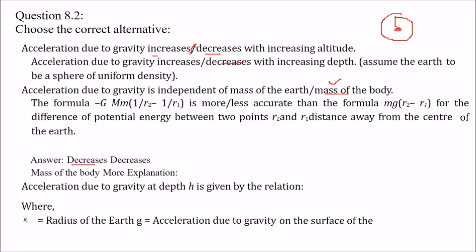Phir: acceleration due to gravity is independent of the mass of body — chahe koi bhi mass of body ho, jo acceleration due to gravity hai woh is mass of body se independent rahegi. Phir acceleration — the formula: minus GMm (1/r1 minus 1/r2), versus (1/r2 minus 1/r1) — is more or less accurate than the formula mg(r2 minus r1) for the potential energy difference between two points r2 and r1 distance away from the center of earth.